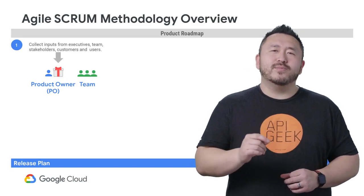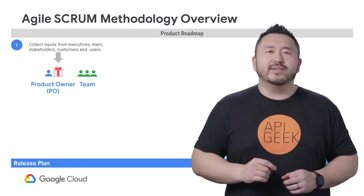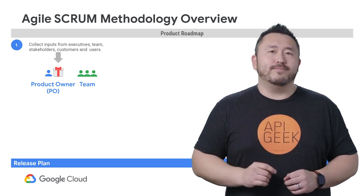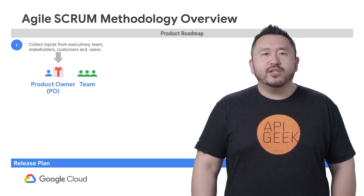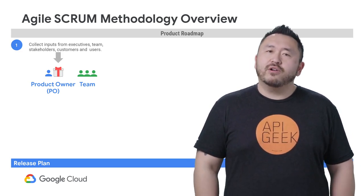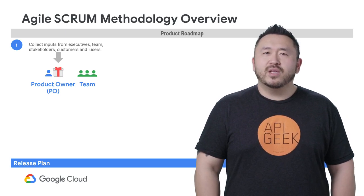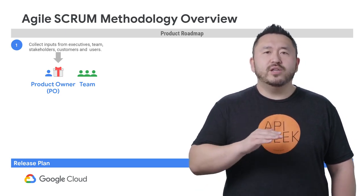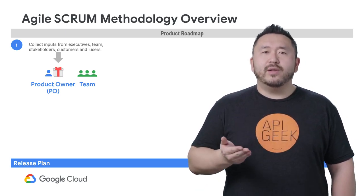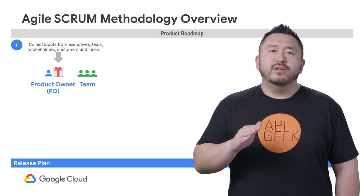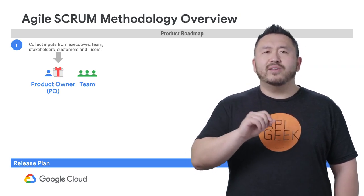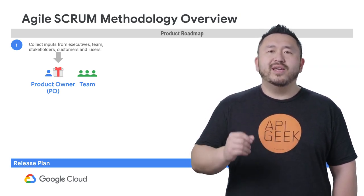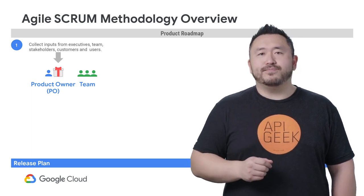Since the Scrum process can be quite complex, we're going to step through this process one at a time. A product owner is the starting point at step one — it all begins with a vision. From this vision, we develop an API roadmap. This should be a high-level scope of the components needed to achieve this vision and deliver value for the organization.